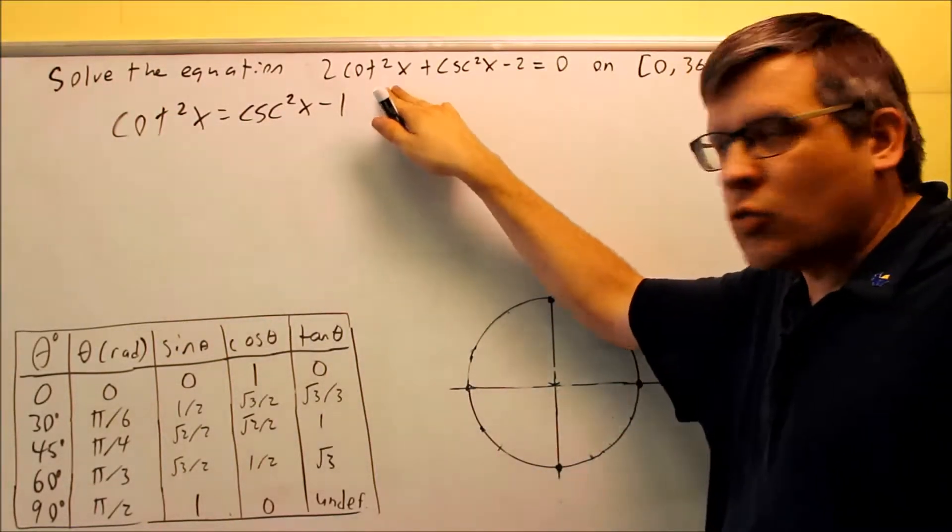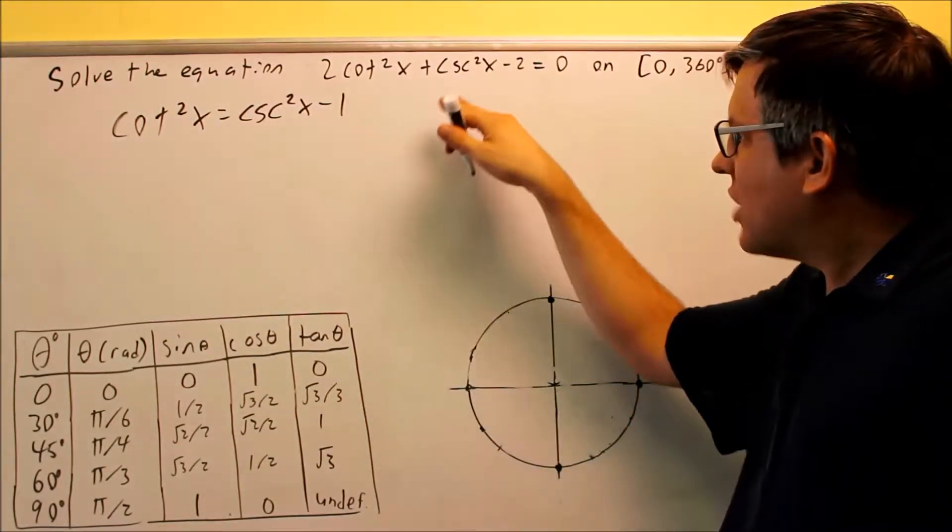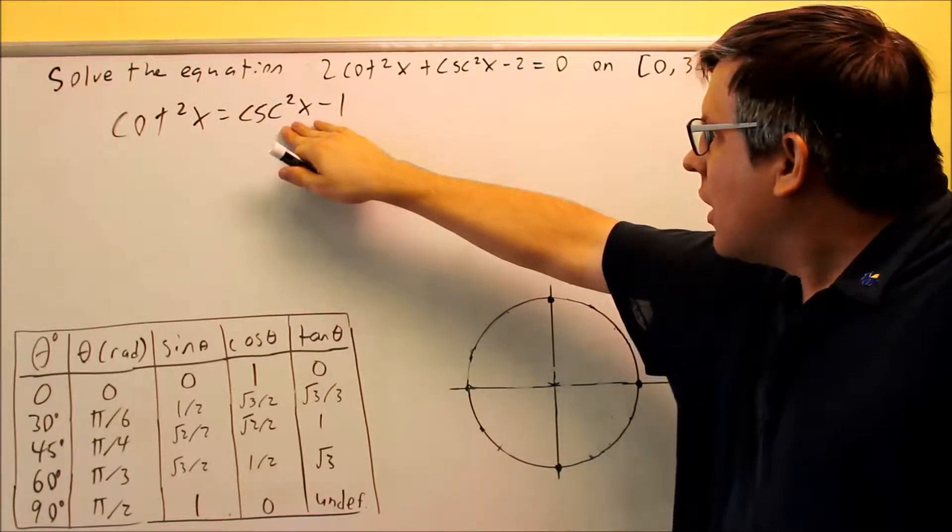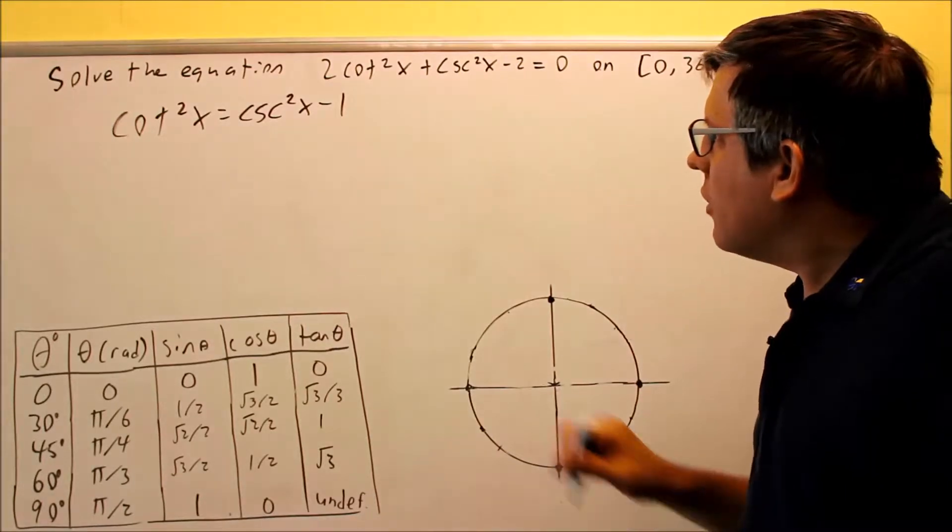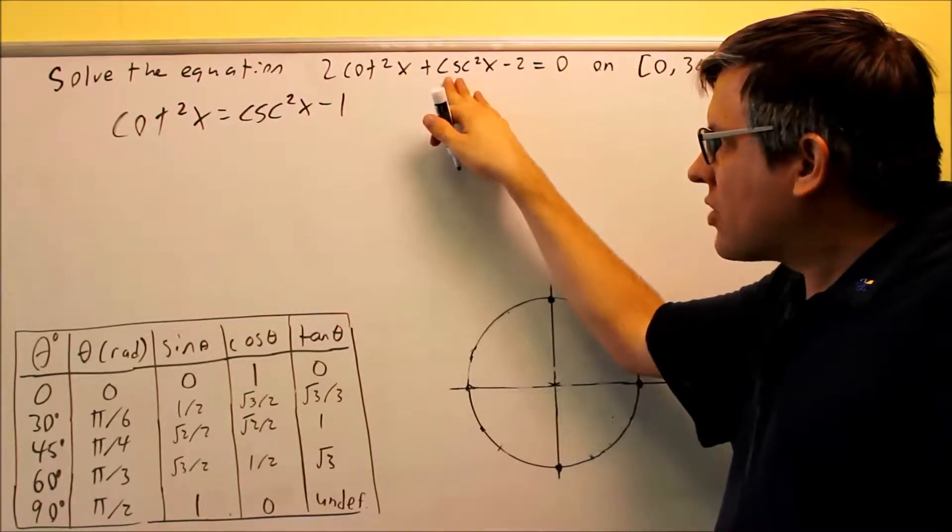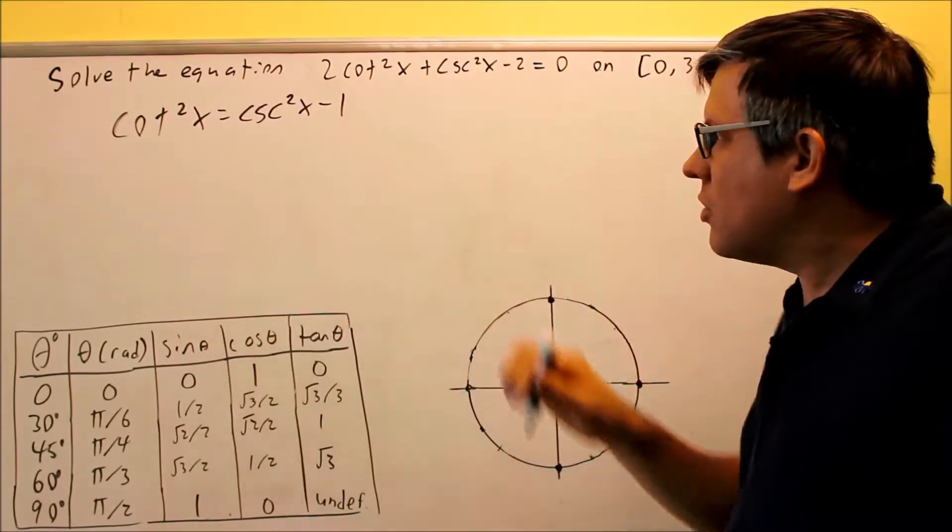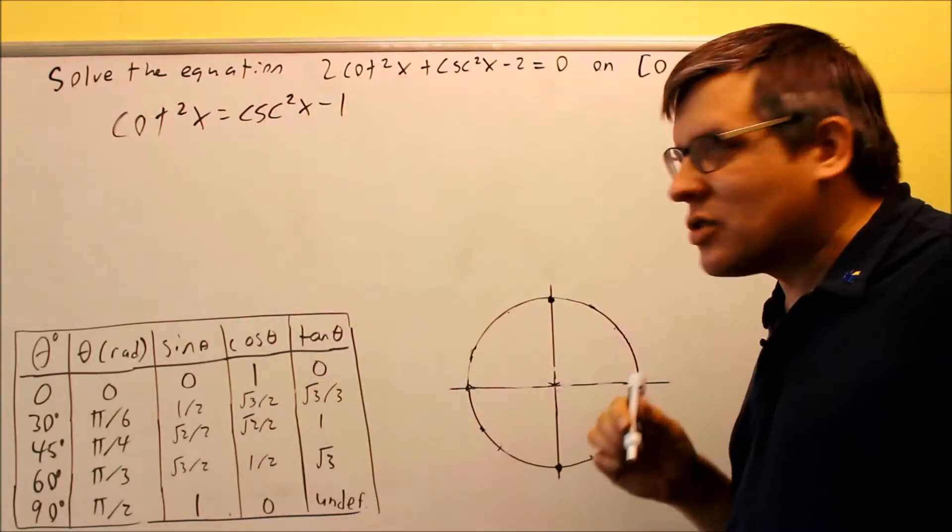We're going to replace the cotangent squared with cosecant. I could have put in the same identity and solved for cotangent squared. Basically I can either change out the cosecant by having the whole answer in terms of cotangent or the whole answer in terms of cosecant. I'm going to use cosecant instead here.